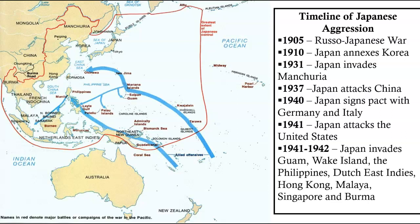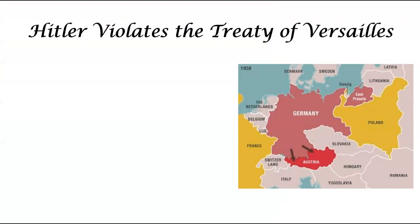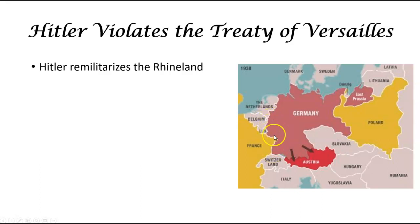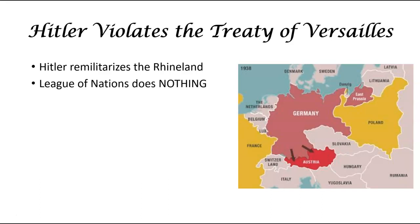Back over in Europe, Hitler is going to start violating the Treaty of Versailles. The first thing he does is remilitarize the Rhineland, an area between France and Germany, kind of along the border stretching up into Belgium. That area, as part of the Treaty of Versailles, had to be demilitarized — no military, no weapons. Hitler actually marches a bunch of soldiers in with black painted sticks, and France and the League of Nations do nothing.